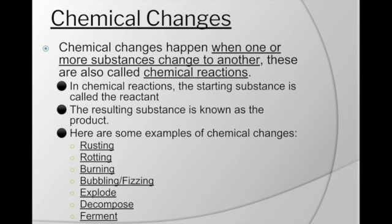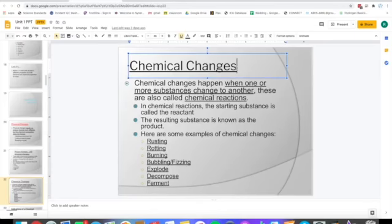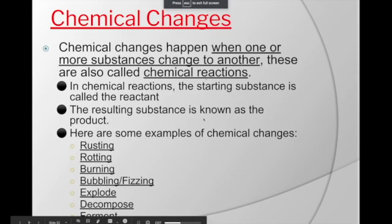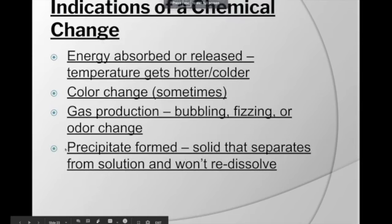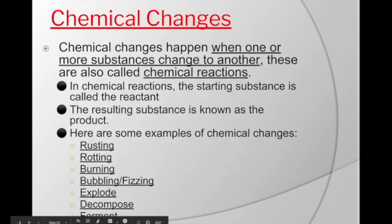Now we're going to move to chemical changes. Make sure you highlight 'chemical changes' — I forgot to change that to red so I'll do that right quick. Chemical changes happen when one or more substances change into another substance. It's also known as a chemical reaction, meaning you start with something, it reacts with something else, and it makes a brand new substance.